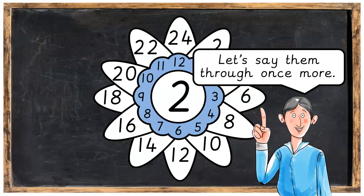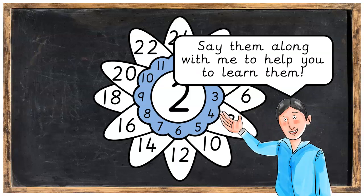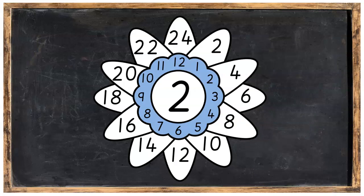Great work. Let's say them through once more. Say them along with me to help you to learn them. So we've got 2 and then 4, 6, 8, 10, 12, 14, 16, 18, 20, 22, 24.